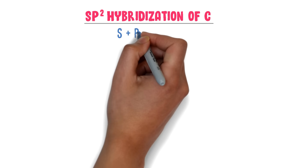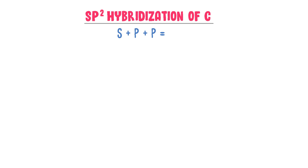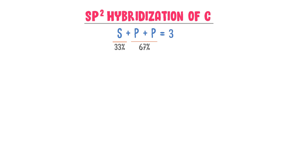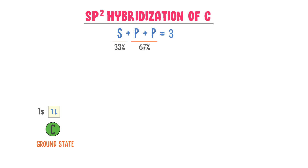Now let me teach you SP2 hybridization. SP2 hybridization means that in this mixture of atomic orbitals there is one S orbital and two P orbitals. Hence, there are three orbitals total present in SP2 hybridization, with 33% S character and 67% P character.